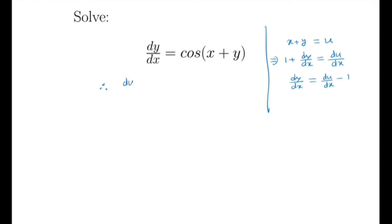By substituting this, we have du/dx minus 1 equals cos u. So we have du/dx equals 1 plus cos u.